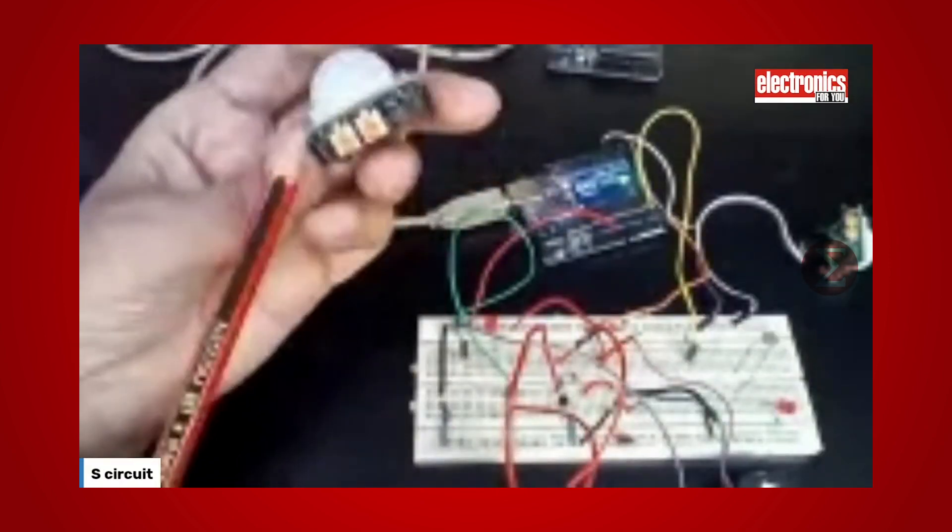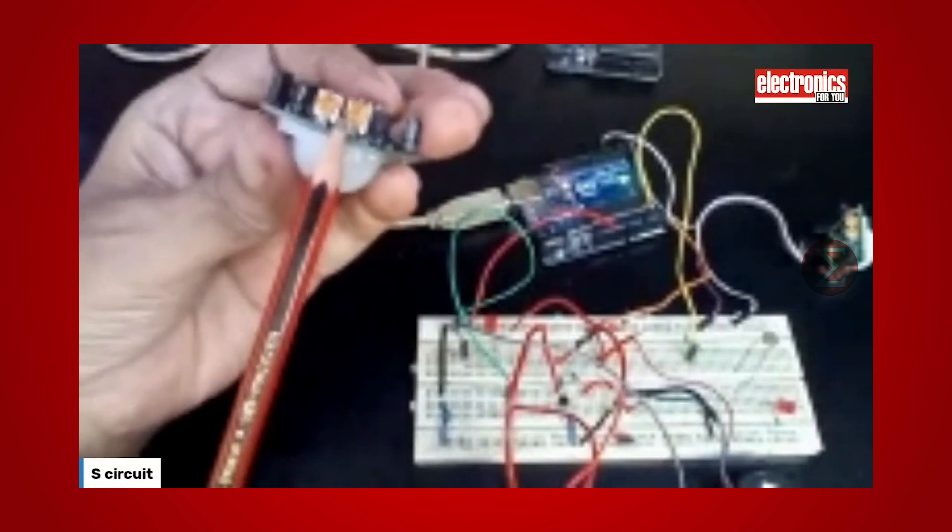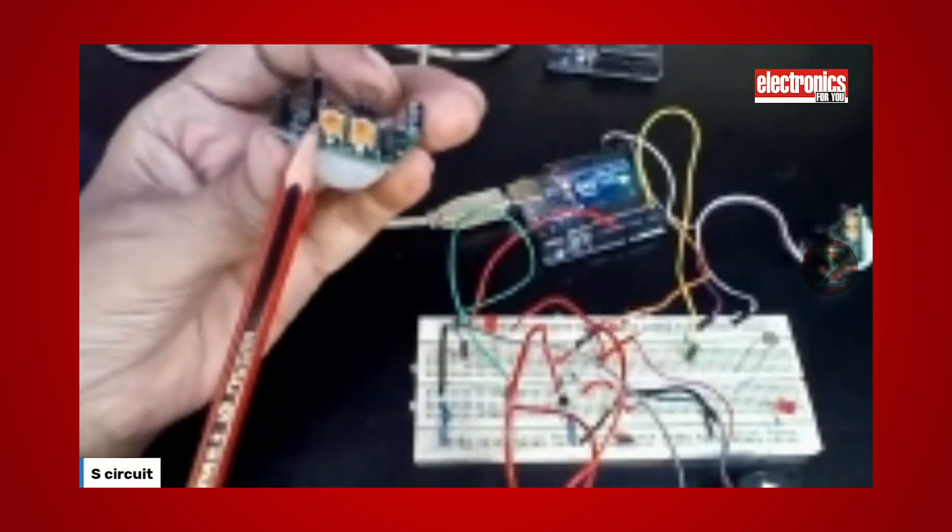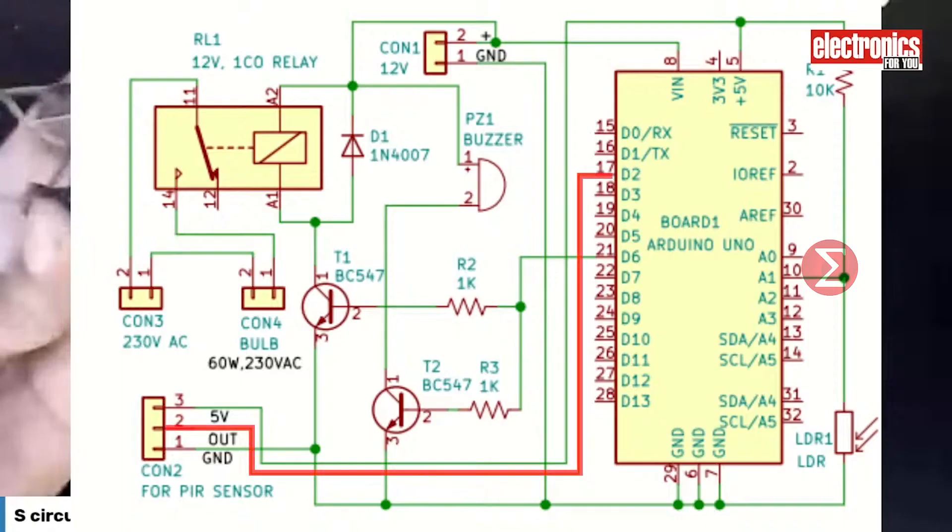These are two potentiometers, one sets the sensitivity and other sets time ranging from 3 seconds to 15 seconds. We have connected the output pin of the PIR sensor to the D2 pin of the Arduino Uno board as visible in the circuit diagram.